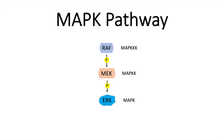The MAP kinase pathway will in the end lead to the transcription of genes involved in cell proliferation and cell survival. When out of control, the MAP kinase pathway can easily lead to cancer.